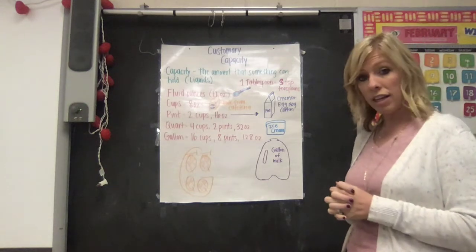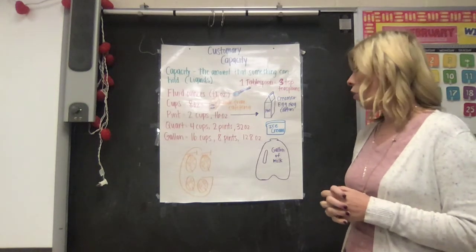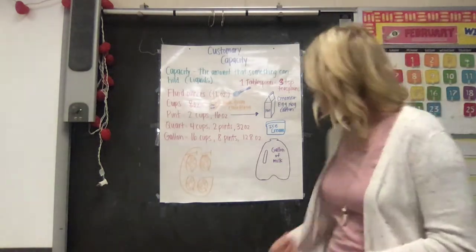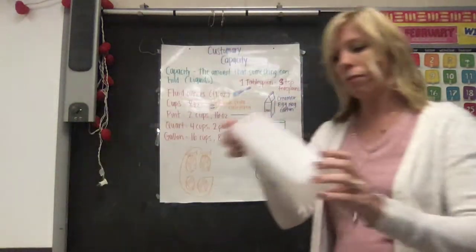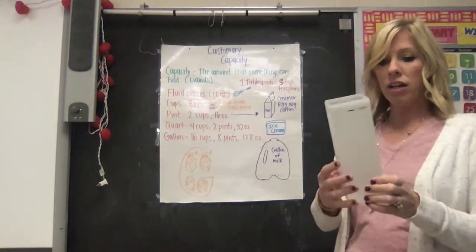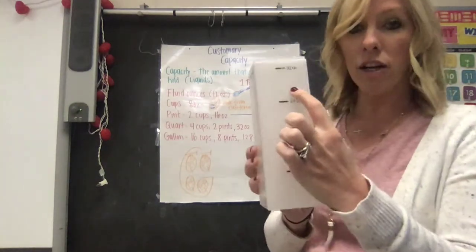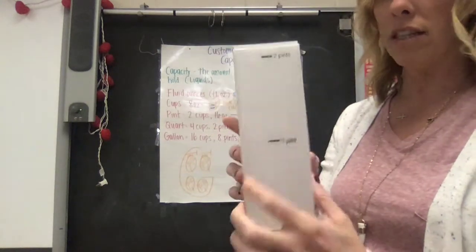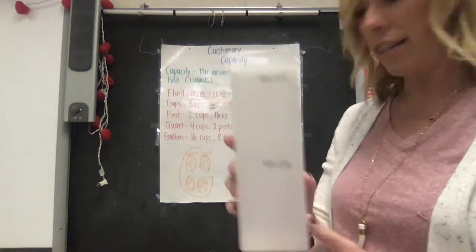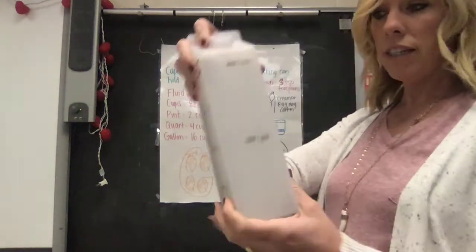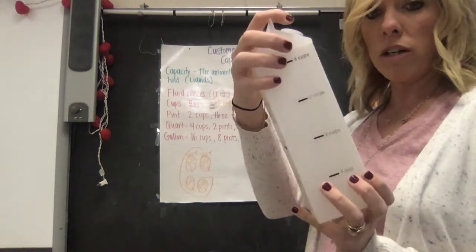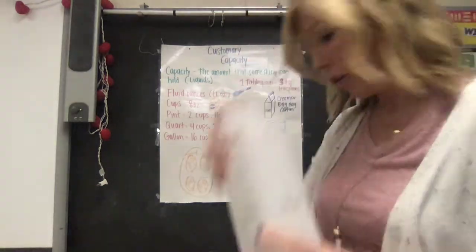A quart has four cups, or two pints, or 32 ounces. I have an example of a quart right here and you can see that a quart has 32 ounces and four cups or two pints inside of it. And here's the lid. So this is your quart. A lot of people do buy quarts of milk or quarts of other liquids.